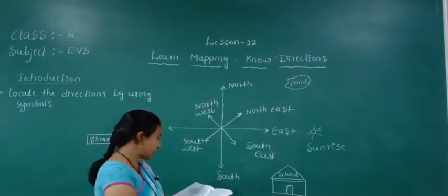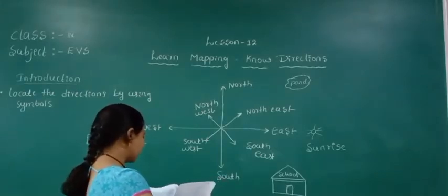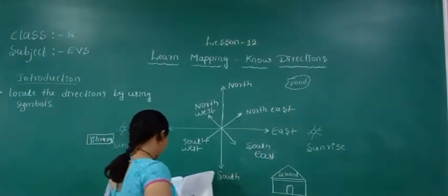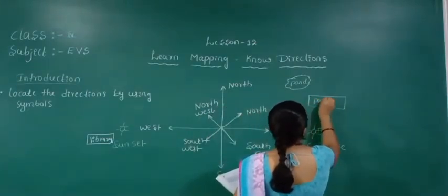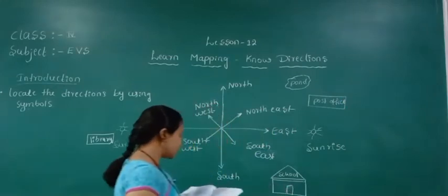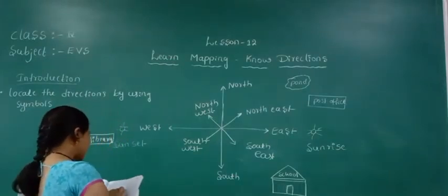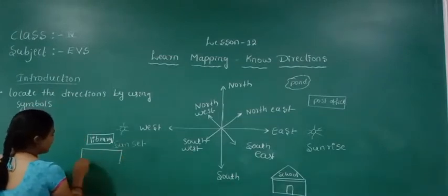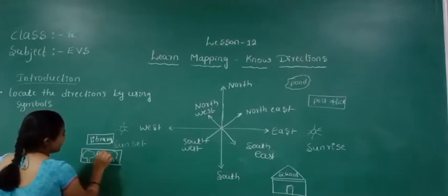Next — post office. Post office is in the north east direction. Next one — park. Park is in the west side. I will draw a park here — some trees are there. It is a park.